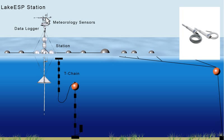The Vaisala HMP155 Humicap measures air humidity and temperature. This sensor also has a serial data output and can be directly connected to Lake ESP.